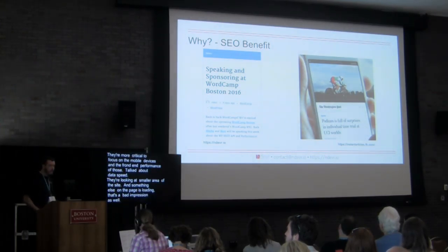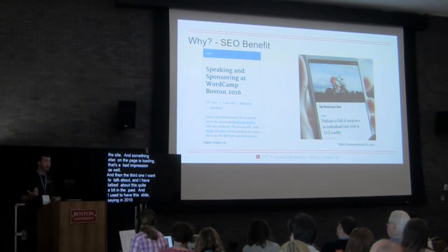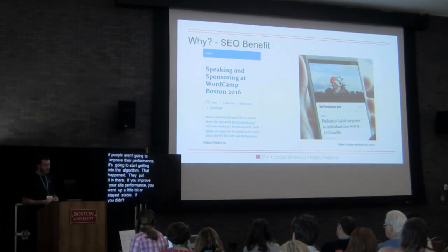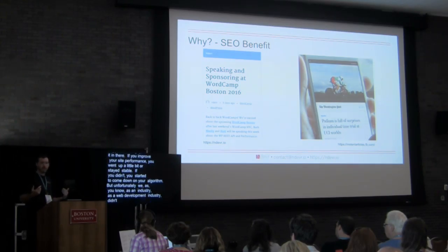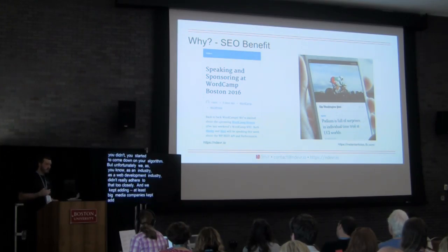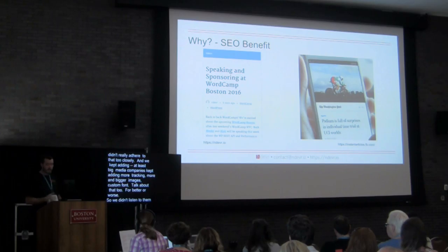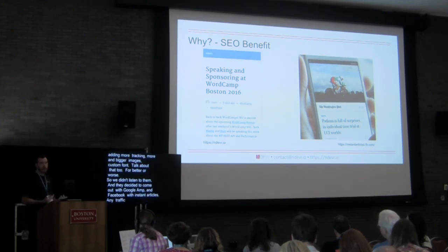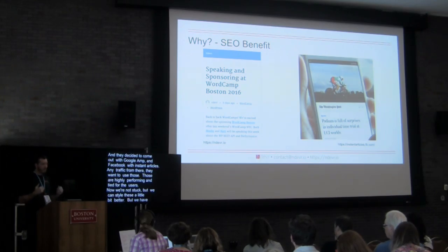The third reason is SEO. Back in 2010 Google said if people don't improve their performance it's going to factor into the algorithm — and it did. If you improved your site performance you went up a little, if you didn't you came down. But as an industry we didn't adhere to that closely. Big media companies kept adding more tracking, more images, bigger images, custom fonts. So Google came out with Google AMP, and Facebook came out with Instant Articles. Any traffic coming from those platforms will use those formats because they're highly performant. So we're pushed back into a bare minimum for that type of traffic — and if you don't use AMP, it's going to affect the algorithm.